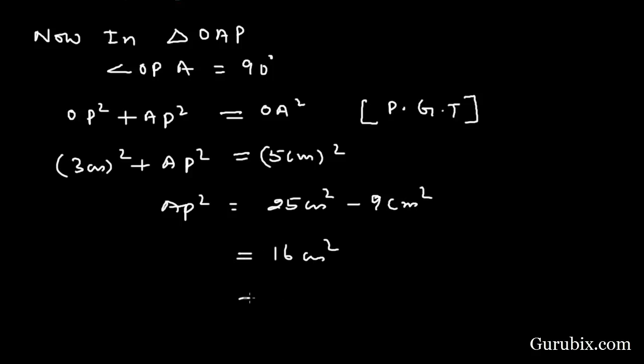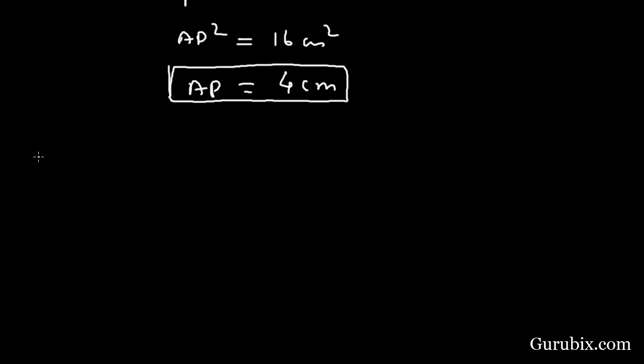Also, OP is perpendicular to AB. Therefore, AP equals PB because the perpendicular from the center bisects the chord.